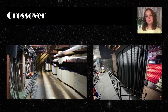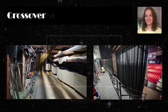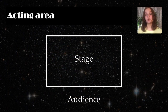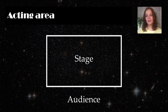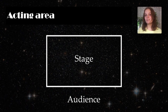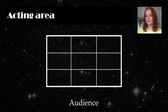A crossover is a corridor, room, or other space in a theater that allows actors to pass from one side of the stage to the other without being seen. The acting area is the actual area of the stage that is visible to the audience — the space where performers may move in full view — and the acting area is divided into nine places.